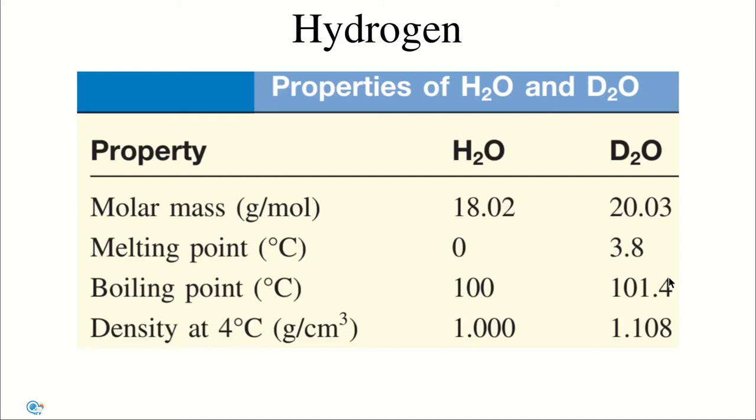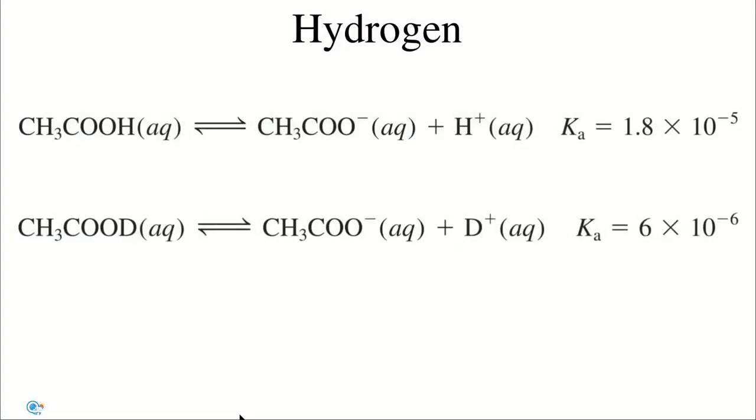The reason is that deuterium is heavier than hydrogen, thus its compounds often react more slowly than those of the lighter isotope. Regular drinking of heavy water instead of water could prove fatal because of the slow rate of transfer of D+ compared with that of H+ in the acid-base reactions involved in enzyme catalysis. This kinetic isotope effect is also manifest in acid ionization constants.